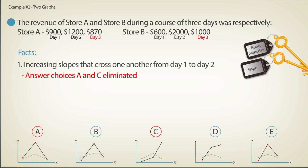On day three, both stores saw a decline in revenue. Because graph D presents only one decreasing slope, it too can be eliminated.